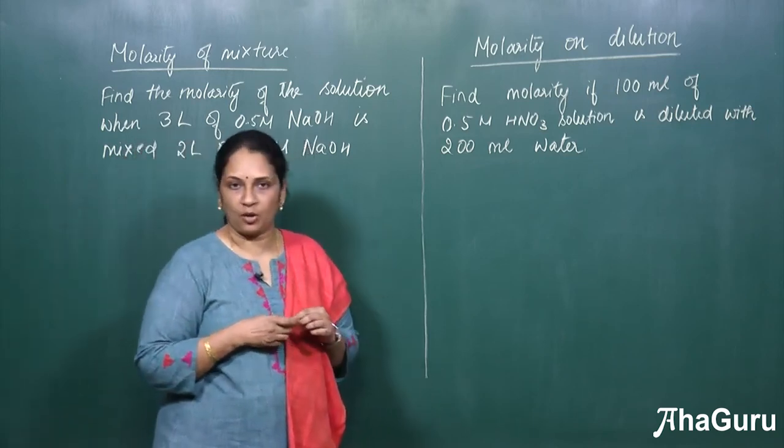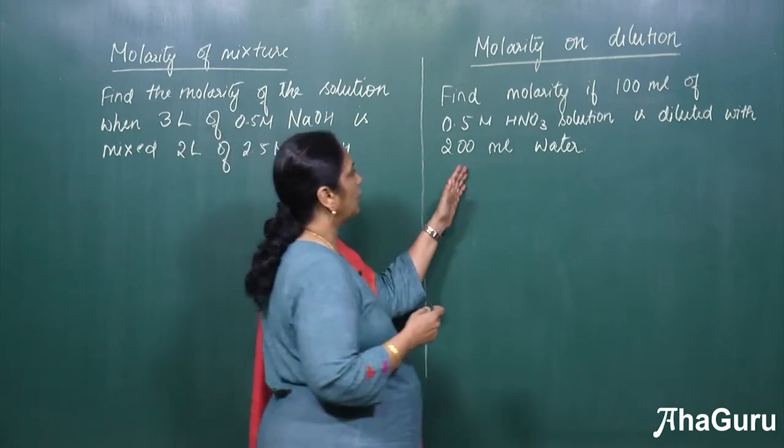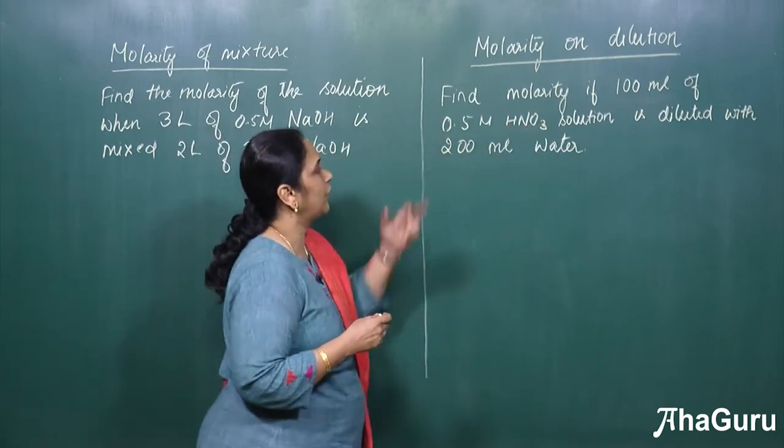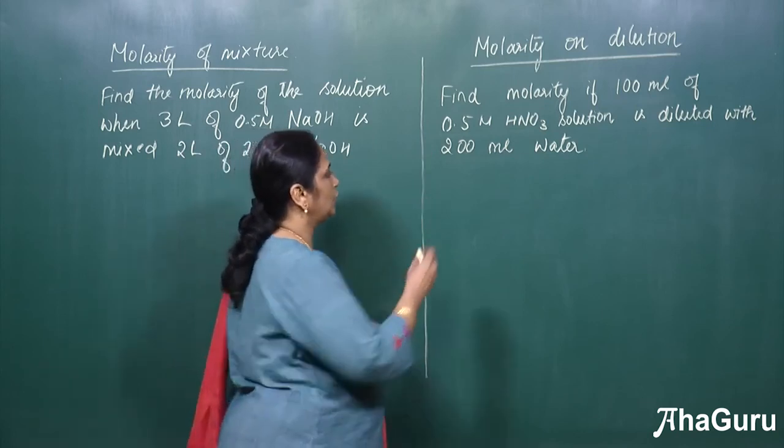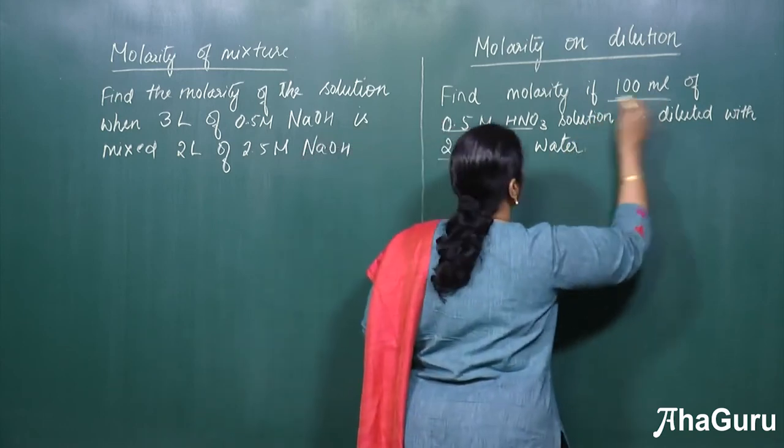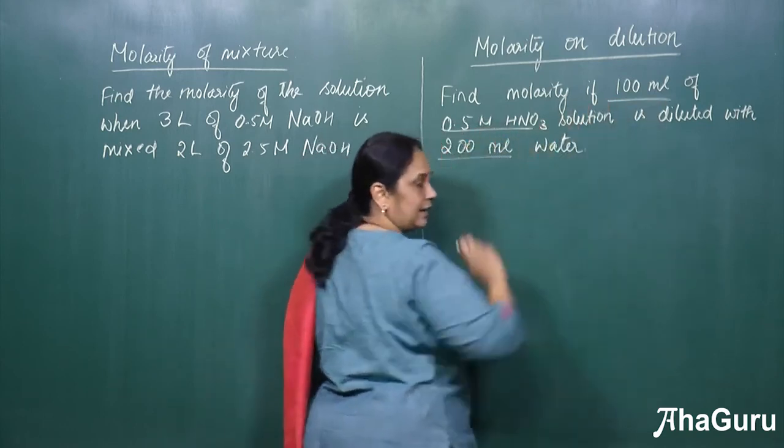First, we will see the molarity on dilution. Now here, find molarity if 100 ml of 0.5 M nitric acid solution is diluted with 200 ml of water and initial concentration of 0.5 M is in 100 ml.